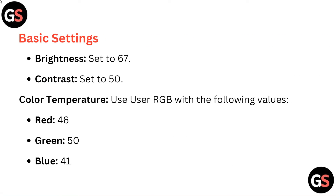Basic settings: Brightness set to 67, Contrast set to 50. Color temperature: use User RGB with the following values — Red 46, Green 50, Blue 41.